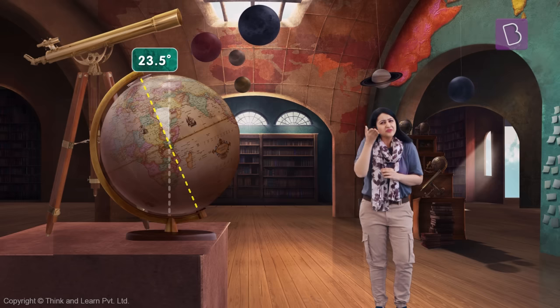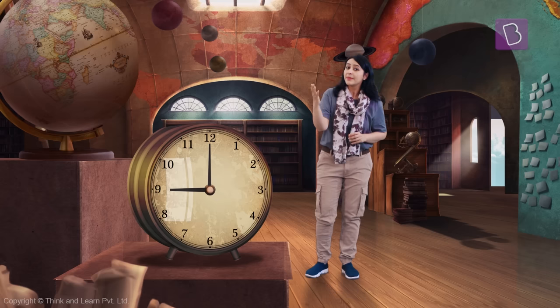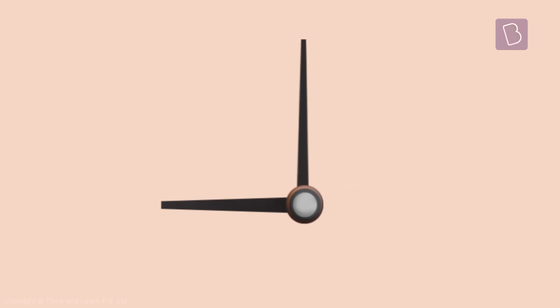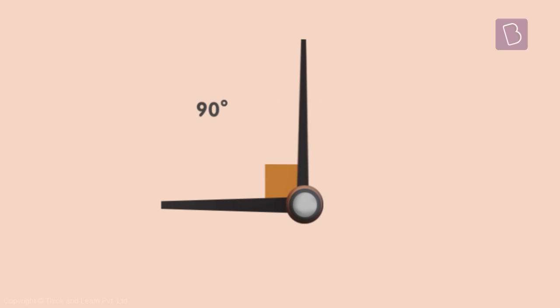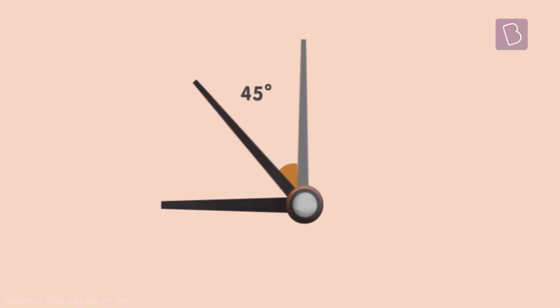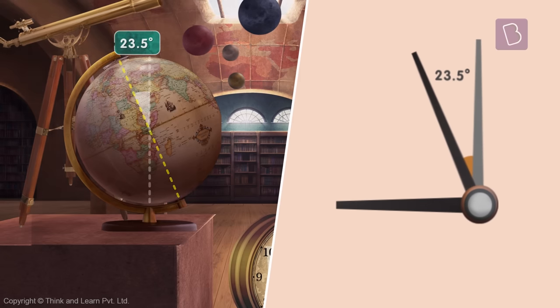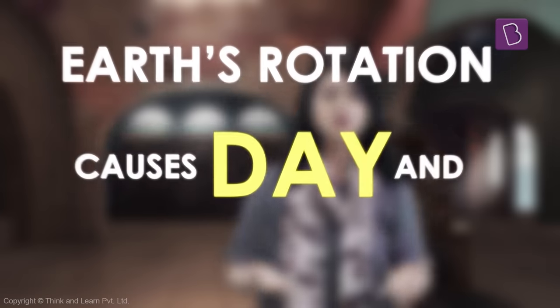The earth is tilted at an angle of 23.5 degrees, so the axis isn't straight — it's sort of slanting as it spins. Let me explain how much that is through a clock. If we imagine the minute hand is the line of reference, at 9 o'clock the hour hand makes an angle of 90 degrees. Half of that is 45 degrees. Half once more is 22.5 degrees — and the earth is tilted just one more degree, at 23.5 degrees. That is the angle at which the earth rotates.